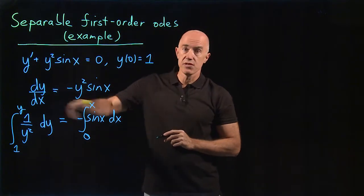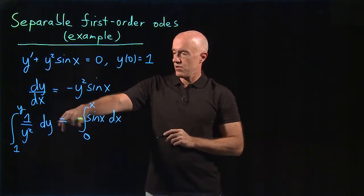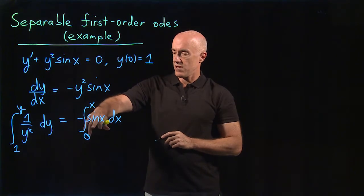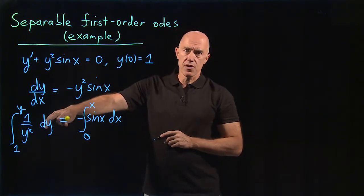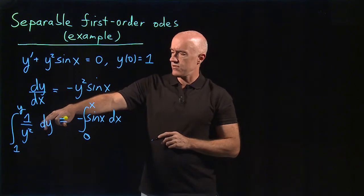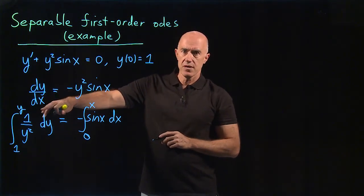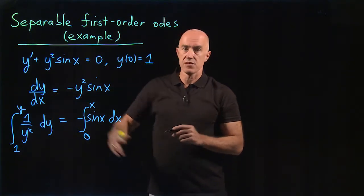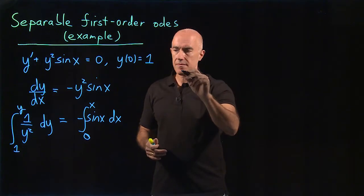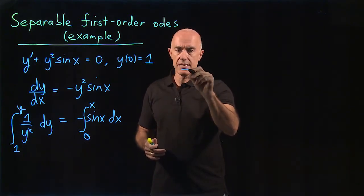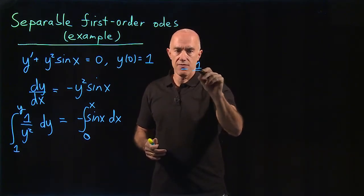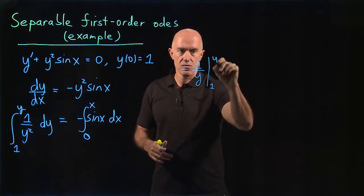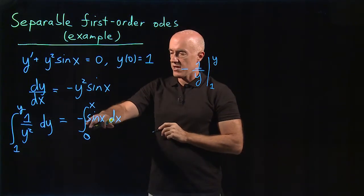We have the integral of 1/y² dy and the integral of sin(x) dx. The integral of 1/y² is the integral of y^(-2), so it's y^(-1)/(-1). We get -1/y, evaluated between 1 and y. That's the integral of the left-hand side.